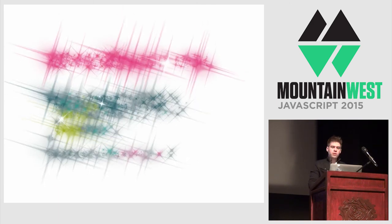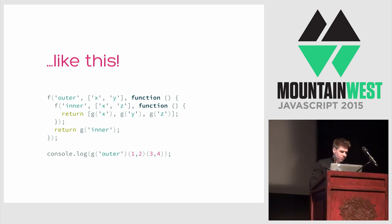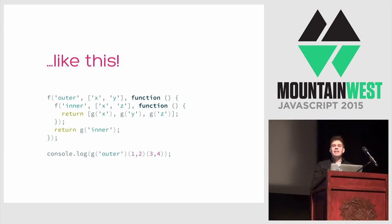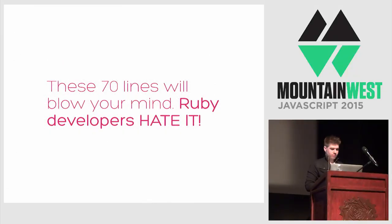With those substitutions, we'll end up with code that looks something like this, which will be a whole lot faster. With those substitutions in place, all we need to do is write the s, g, and f functions. Without further ado, we are going to completely rewrite closures in 70 lines of code.